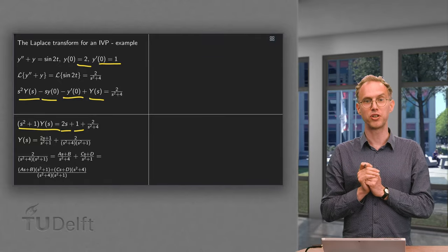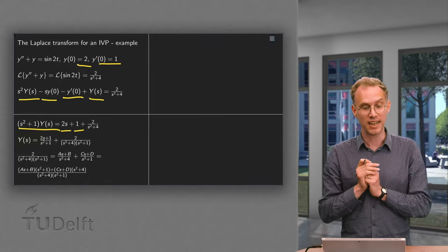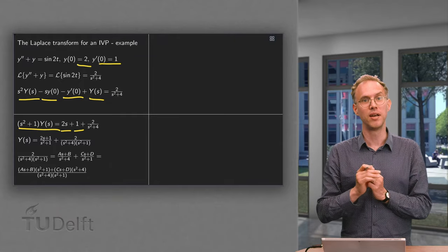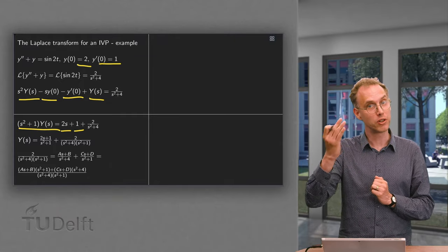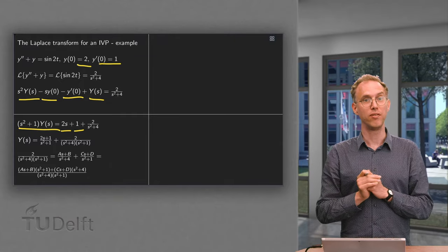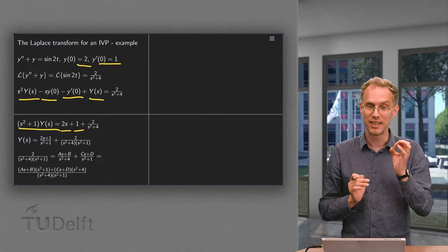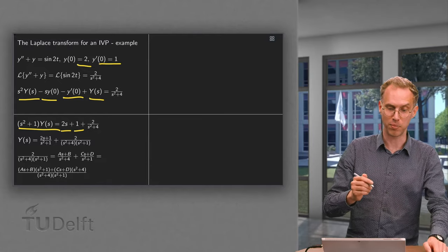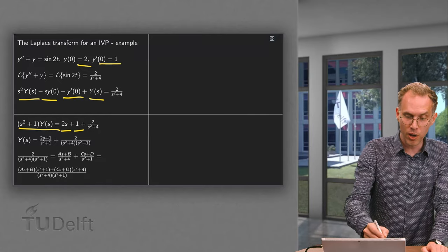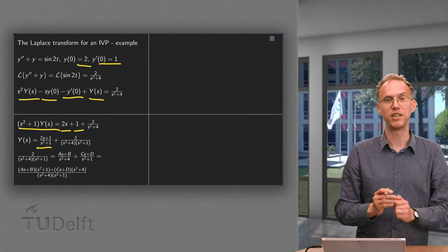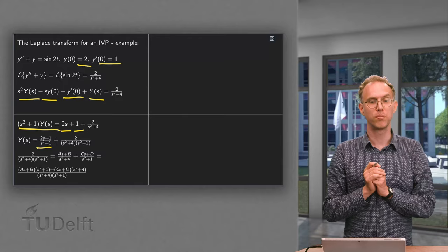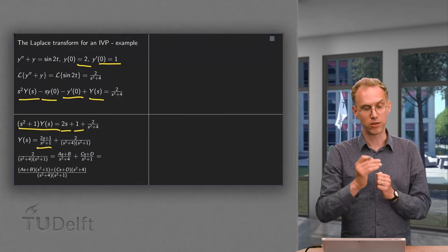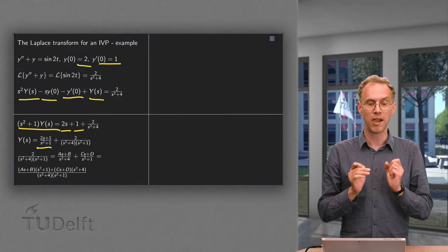So far so good — this is the easy part. We have found Y(s). But now we want to go back and find y(t), and this is usually the hard part. The first term is not too much of a problem; it will be a sine and cosine, something like that.